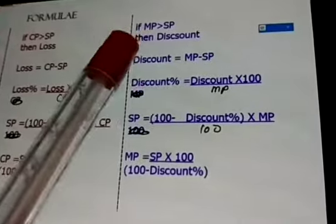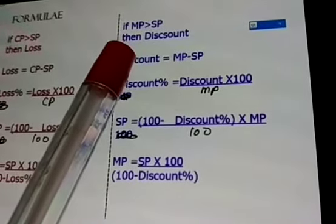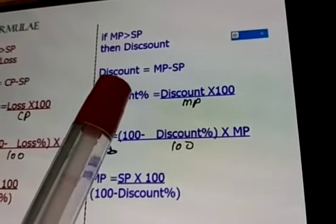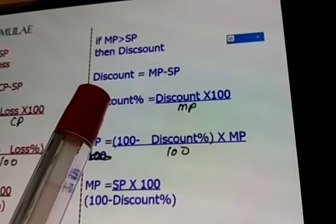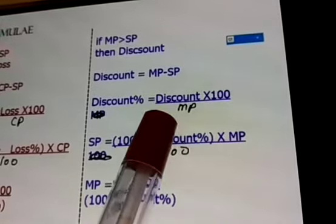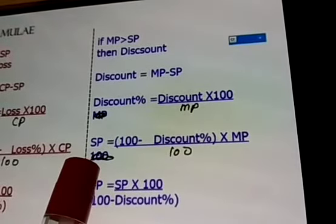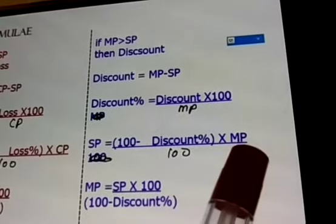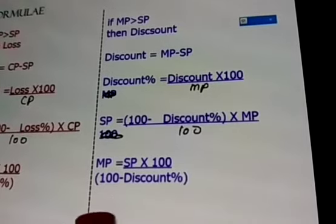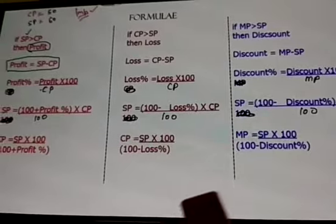The third case is when marked price is given instead of cost price. Marked price is greater than the selling price, so discount is given. Discount equals marked price minus selling price. Discount percentage equals discount into 100 divided by marked price. Selling price equals 100 minus discount percent, into marked price divided by 100. Marked price equals selling price into 100 divided by 100 minus discount percent. All these formulas you have to memorize thoroughly to solve the problems.